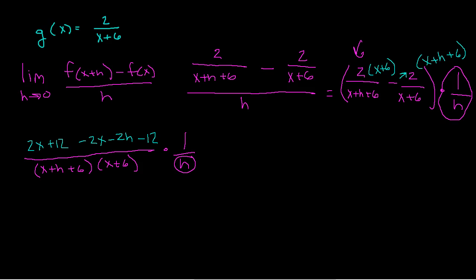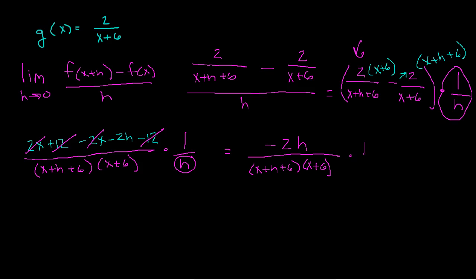I want that h to cancel, but I need a factor first. So: 2x and negative 2x cancel — dust in the wind. Negative 12 and positive 12 cancel. All that's left is negative 2h, all divided by the common denominator — don't multiply it out, leave it alone — times 1 over h. Now I have a factor: negative 2 times h on top, h on the bottom. Those factors cancel and now I'm ready to find the limit as h approaches 0.